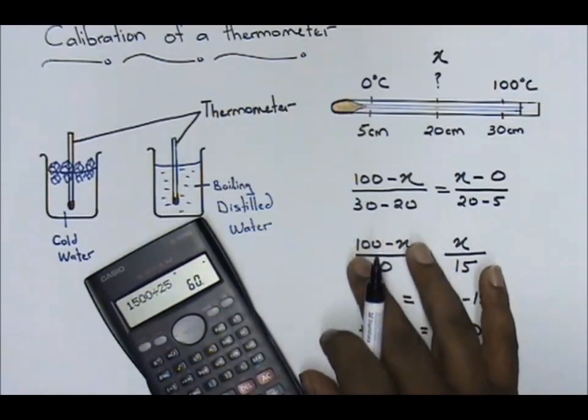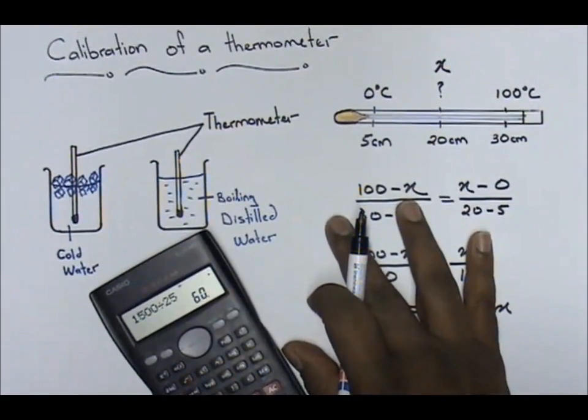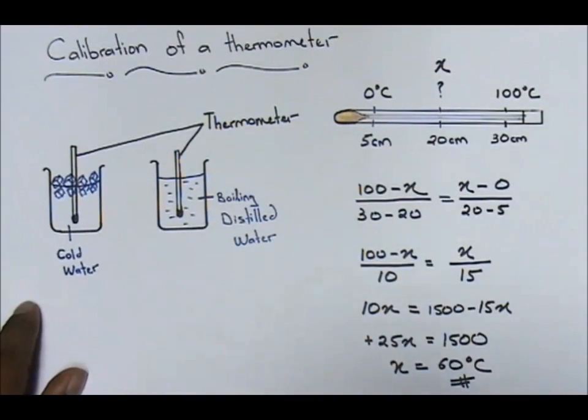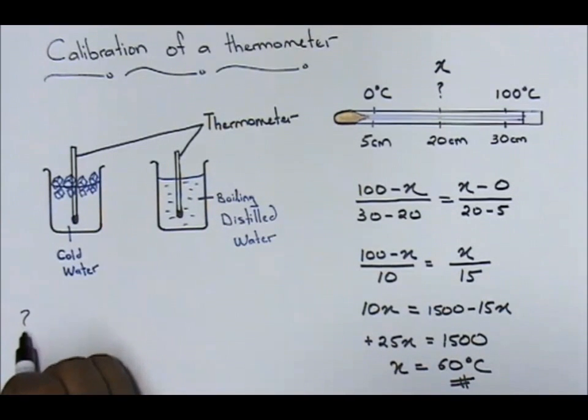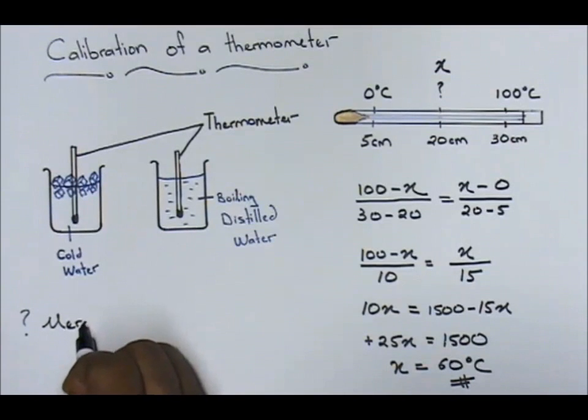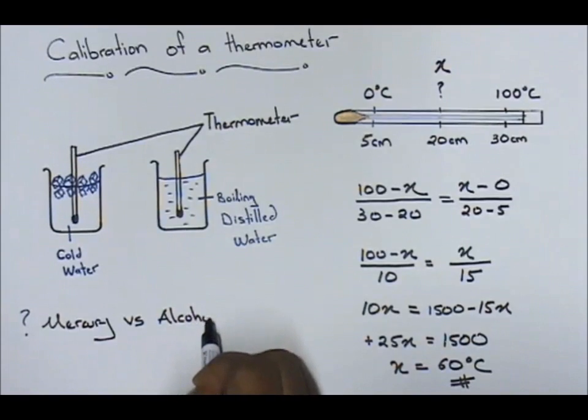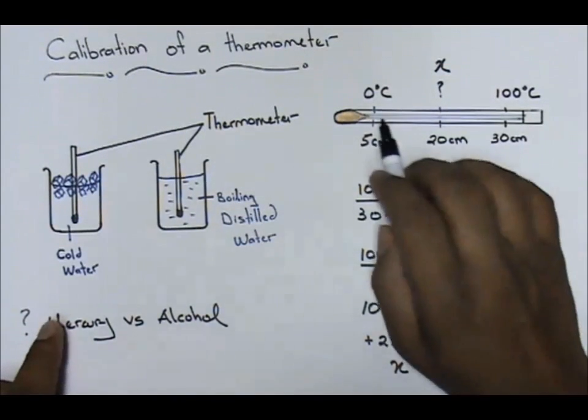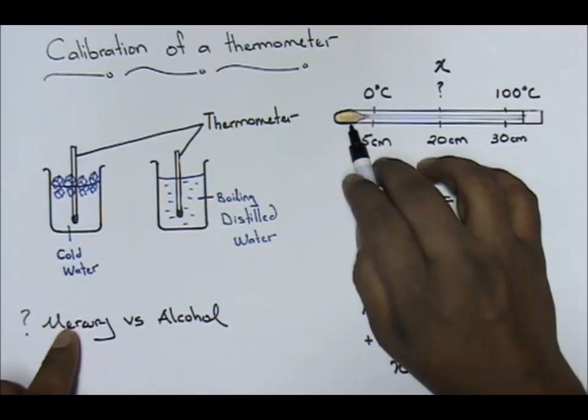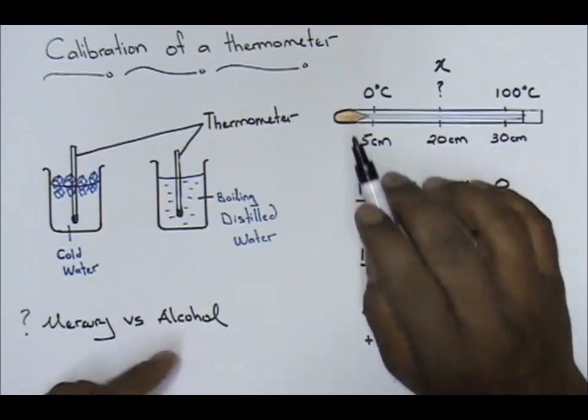Now I just want you to do a small homework at home. Just a quick thing that I want to ask you. Between mercury and alcohol, I'll just write the thought for the day that I want you to think about. Mercury versus alcohol, because you have some thermometers that use mercury and some that use alcohol.